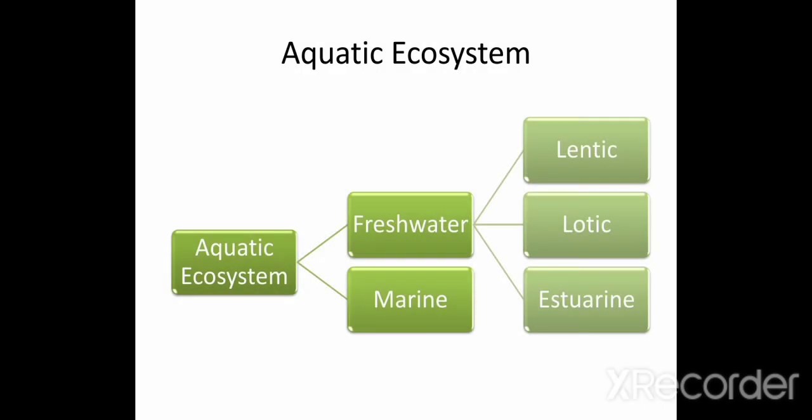Moving towards aquatic ecosystem. Aquatic ecosystem is divided into freshwater ecosystem and marine water ecosystem. Freshwater is water having low salinity level, and in marine water ecosystem salinity will be high. Freshwater ecosystem is further divided into lentic ecosystem, lotic ecosystem, and estuarine ecosystem.